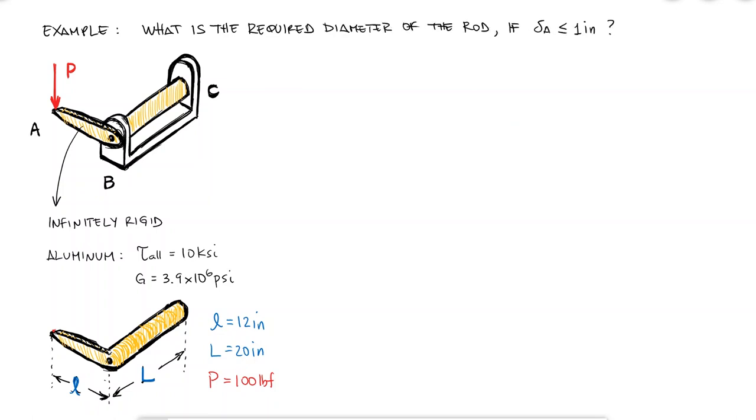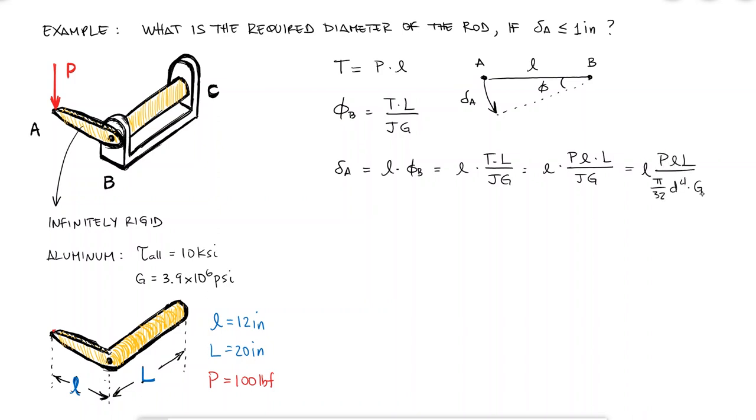We know that load P will create a torque that affects rod BC. Since point C is fixed, the cross section circular area at B will rotate at an angle of twist phi that we can already calculate, and we know that the displacement of A dA will be the arc of that motion given by the angle of twist. Substituting for the angle of twist and the torque T and using what we learned from the polar second moment of area J, I know that 32 PL squared capital L over D to the fourth G should not be greater than 1 inch. Solving for the diameter, we find that the diameter has to be equal or greater than 0.931 inches.